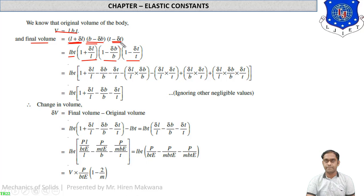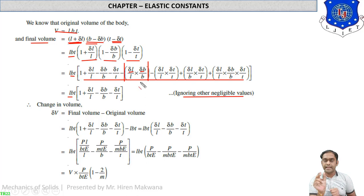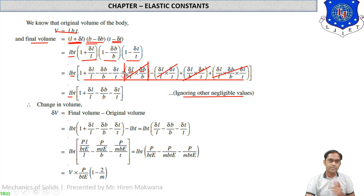Expanding and cross-multiplying these three brackets, terms containing products of two delta values — such as delta-l × delta-b — are negligibly small (small × small) and can be ignored. All such cross-product terms are neglected, leaving only the dominant terms.